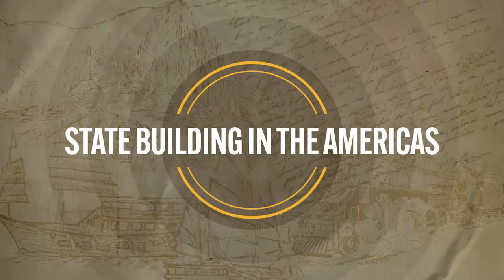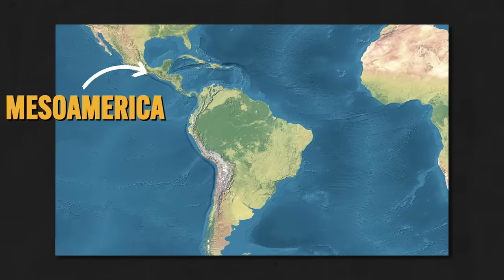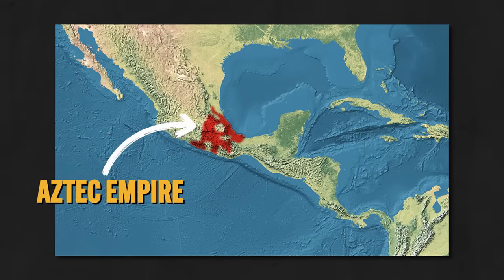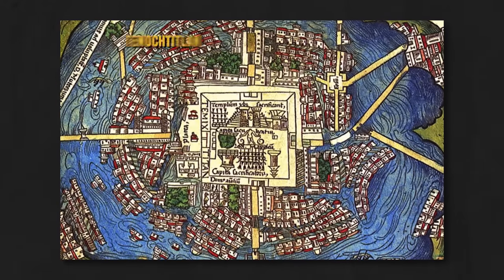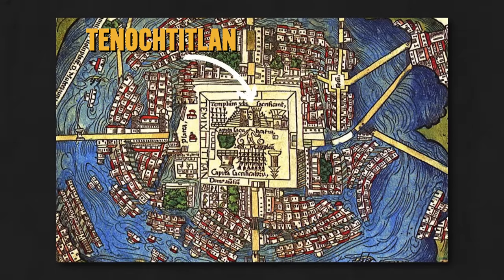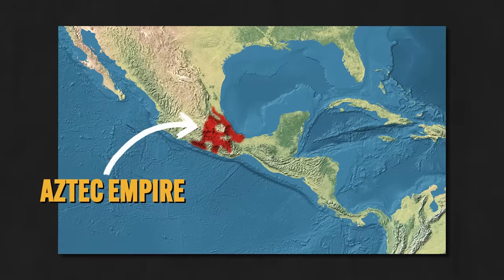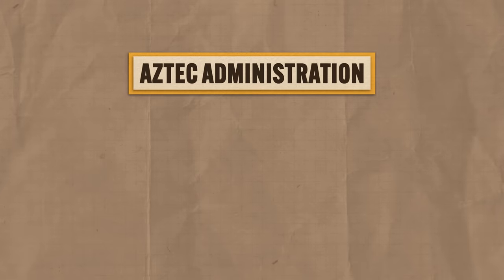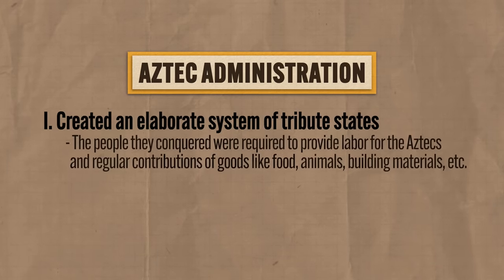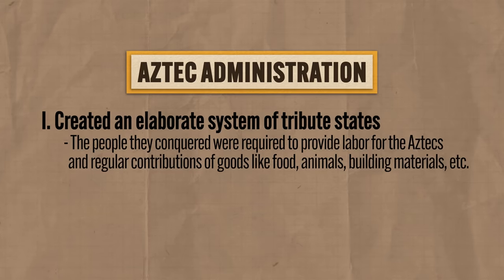Now let's hop over to the Americas and see how they're building states. By 1200, the majority of the population lived in two major centers of civilization: Mesoamerica and the Andean civilizations. In Mesoamerica, the Aztec Empire was founded in 1345 by the Mexica people — and this empire was ginormous. Their capital city, Tenochtitlan, was the largest city in the Americas before the Europeans arrived. By 1428, the Aztecs entered an alliance with two other Mesoamerican states and established an empire with an aggressive program of expansion. In terms of administration, the Aztecs created an elaborate system of tribute states — conquered peoples were required to provide labor and regular contributions of goods like food, animals, and building materials. Enslaved people from conquered regions also played a large role in Aztec religion, especially as candidates for human sacrifice.